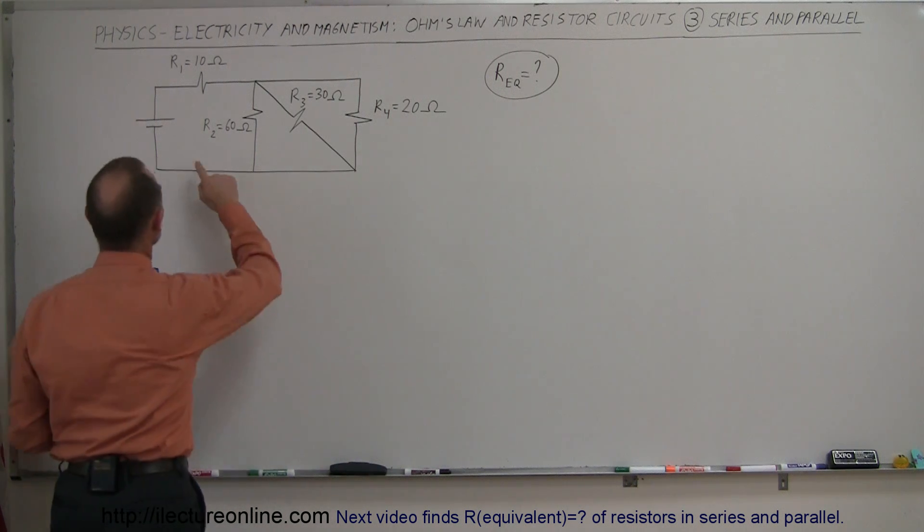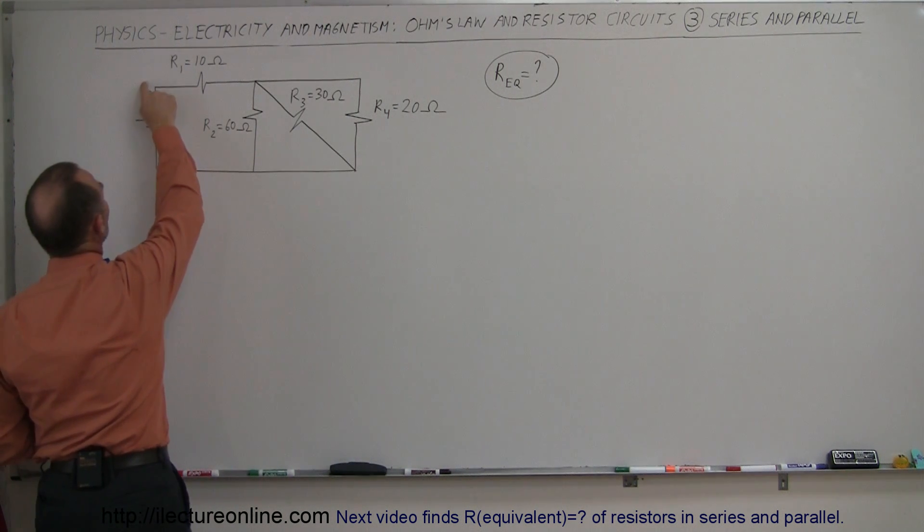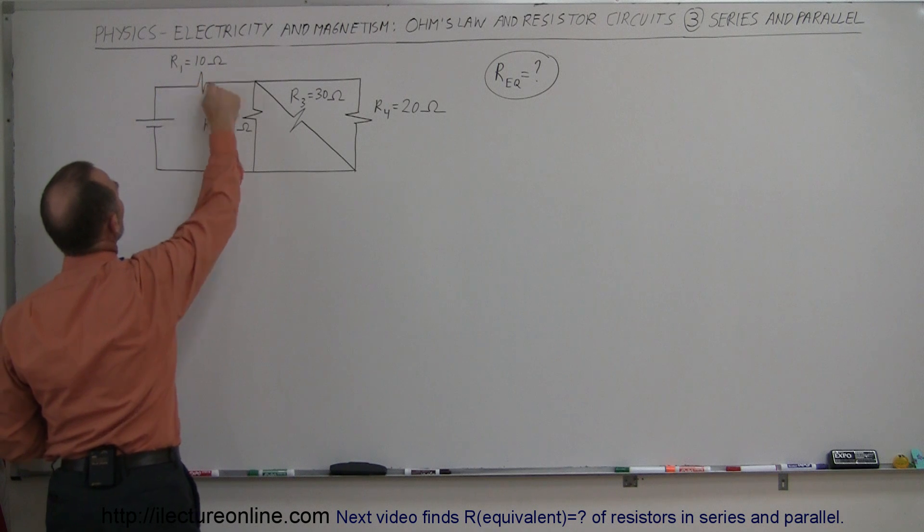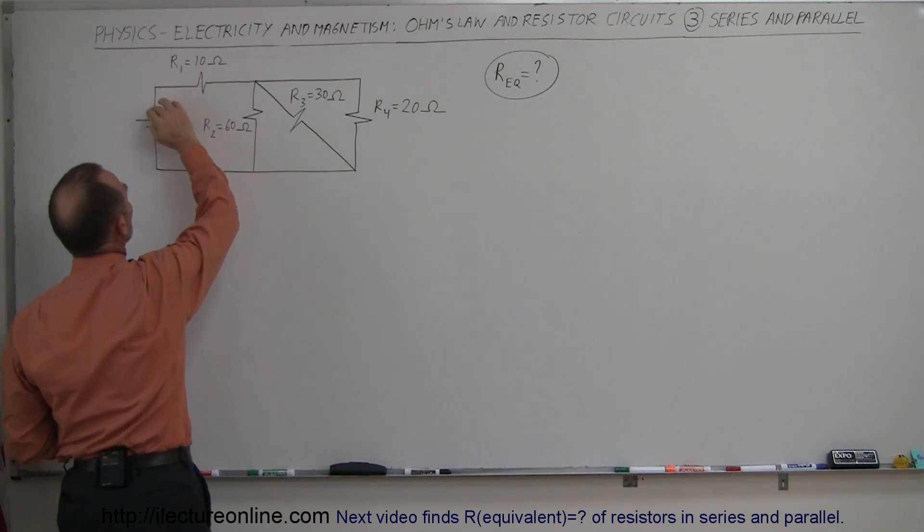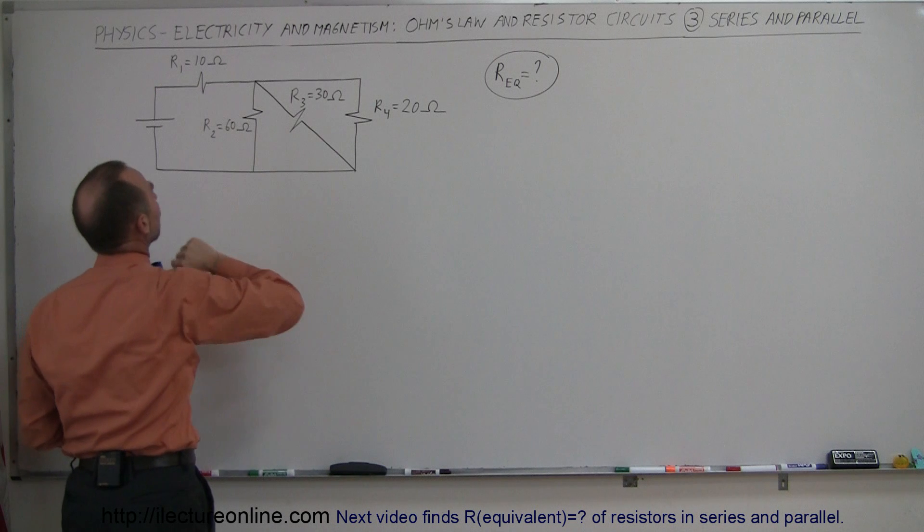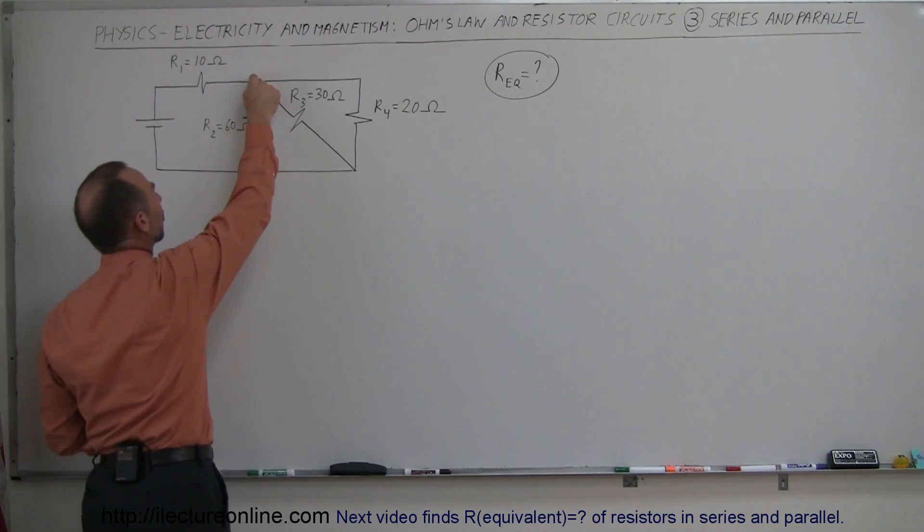The way you do that is you look at here. The current would start from the battery, go through this single resistor. Notice there's no choice but to go through this resistor. All the current must go through R1. Then we get to this junction right here.